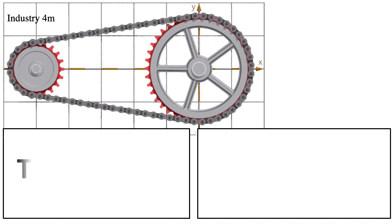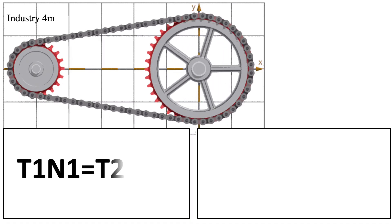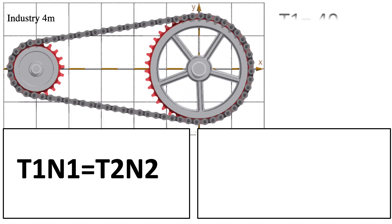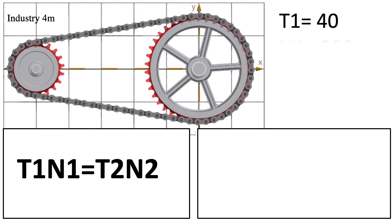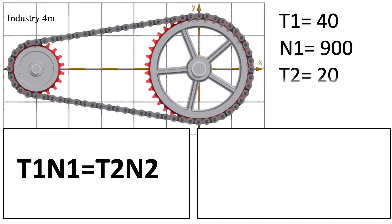Now we are ready to calculate the RPM of the driven sprocket, called N2. Let us put the values in the formula and see the result.